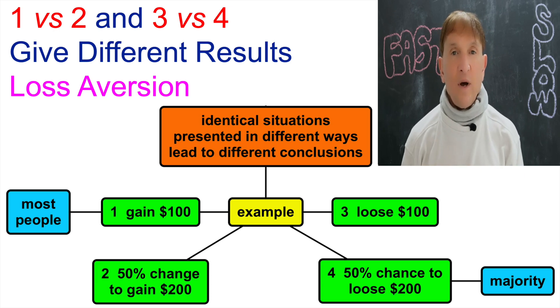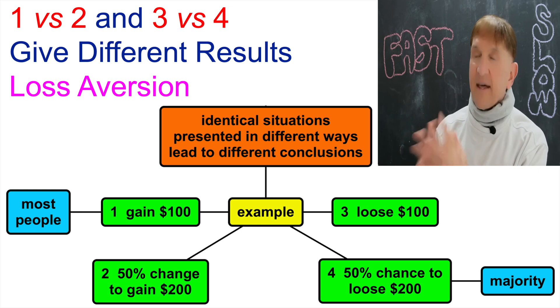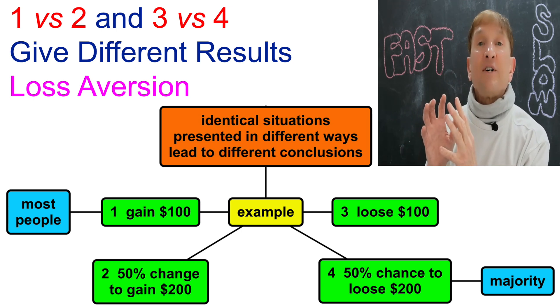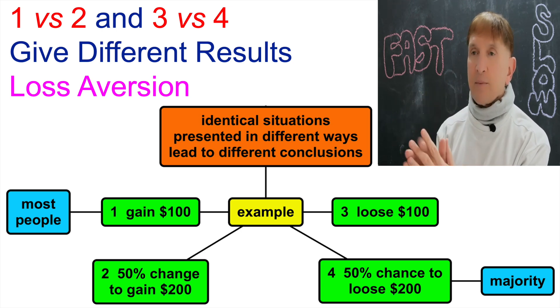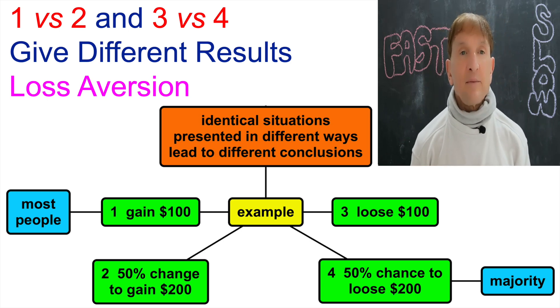Why? Well, they like the idea of a certain gain. But they hate the idea of losing anything themselves. And so to avoid that risk aversion, they choose the 50% chance, risking a loss of $200. The outcome is different.